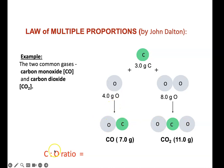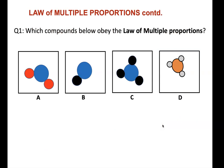Looking at the carbon-to-oxygen mass ratios: for CO it is 3:4, which simplifies to roughly 1:1. For CO₂ it is 3:8, which simplifies to 1:2. So you have two different compounds made from the same elements, and the carbon-to-oxygen ratios are two different whole number ratios — exactly as the law of multiple proportions predicts.